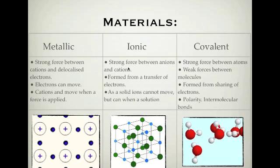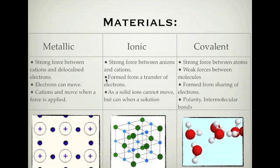Ionic compounds have a strong force between anions and cations, which explains their high melting point. They are formed from a transfer of electrons — a metal gives the electron to a nonmetal. As a solid, the ions cannot move, but when in solution they are broken apart and move around freely in the water. These three dot points can be used to explain all the properties of ionic compounds.